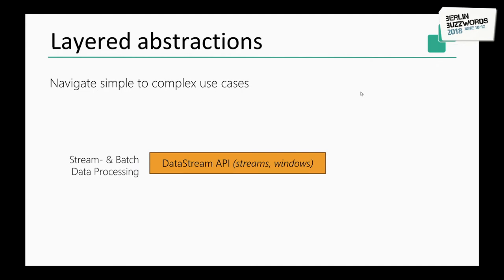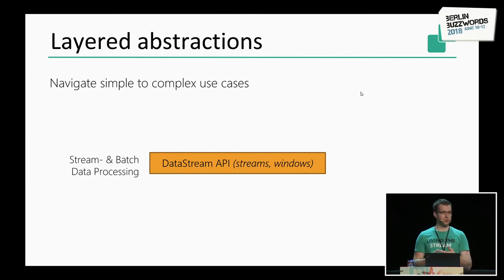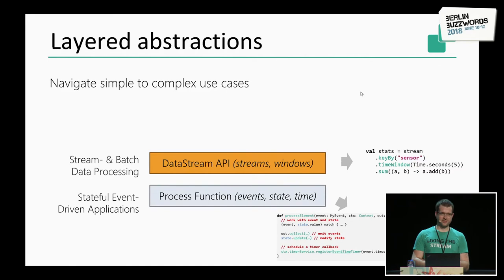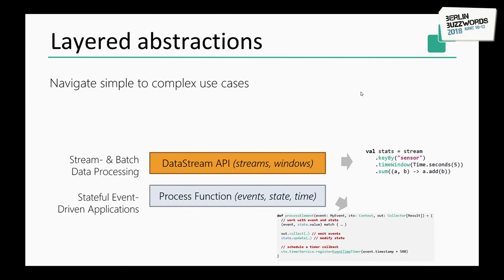If you want to use Flink, you have different abstractions available in layers. In the middle is the DataStream and DataSet API, useful for stream and batch data processing, giving you access to streams, windows, and aggregations. Below that API, you have more fine-grained control with process functions — access to the events themselves, to state of individual operators, to different notions of time, and to watermarks. This is what you'd use to implement a stateful event-driven application.